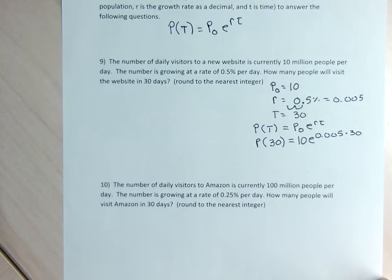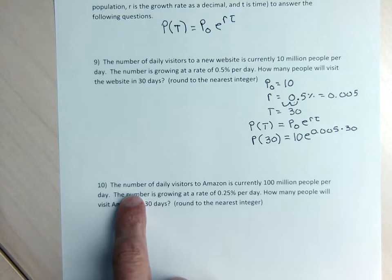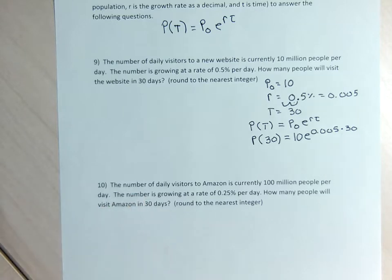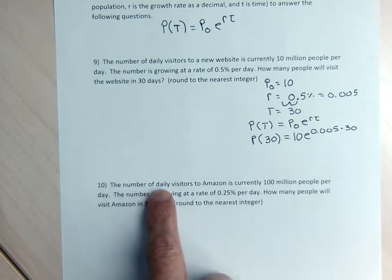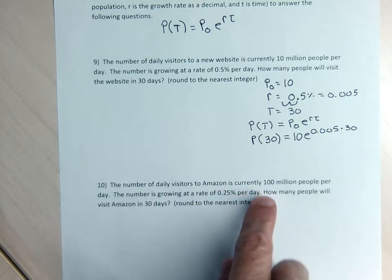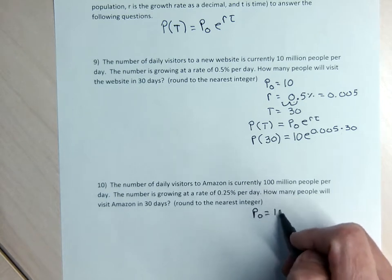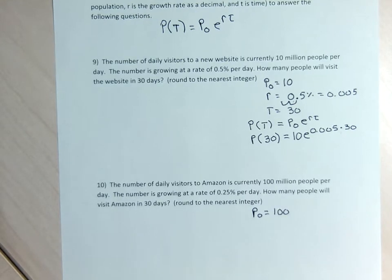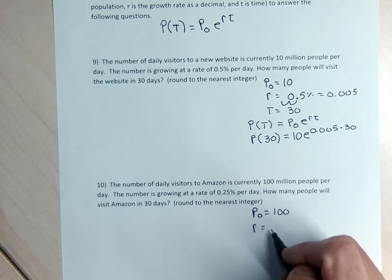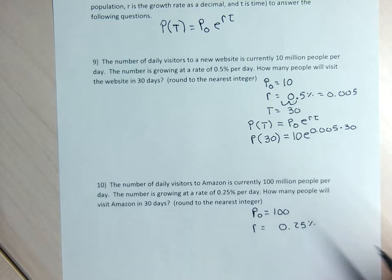Mine is for Amazon. I'm sure I just made these numbers up, but it says the number of daily visitors to Amazon is 100 million. That's going to be my P sub zero — I'm just going to write the number 100 and then tack the word million onto my answer. The number is growing at a rate of 0.25% per day, which is a huge growth rate, probably unrealistically big for an established company.